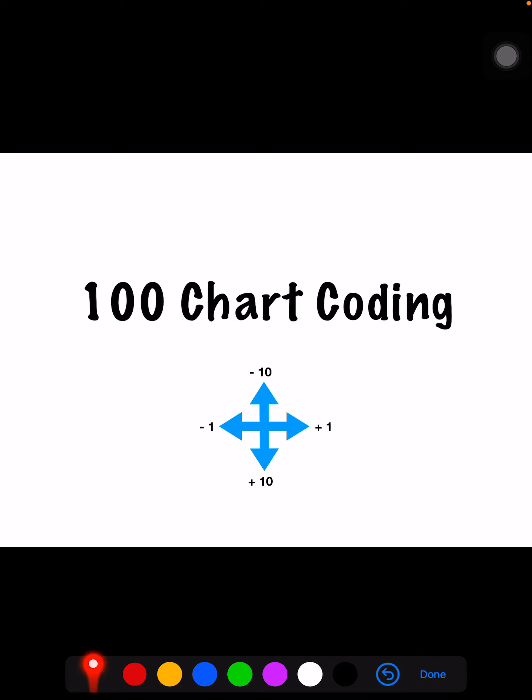Hi, first grade. This week we have been learning patterns on the 100 chart. We learned that if we go up, we are subtracting 10. If we go down, we're adding 10 from the number.